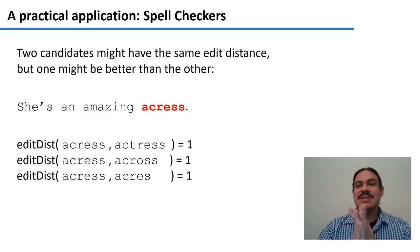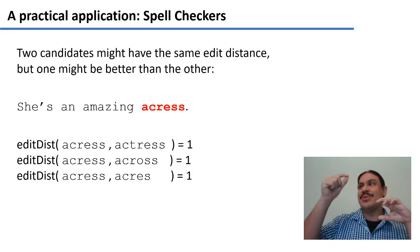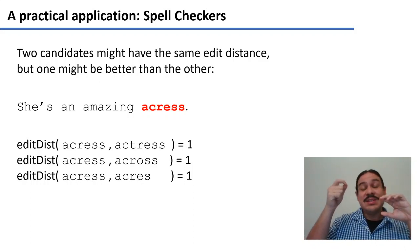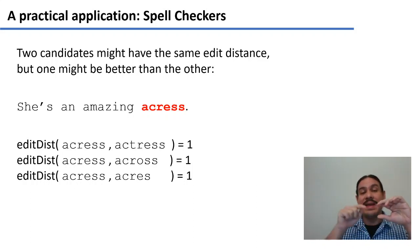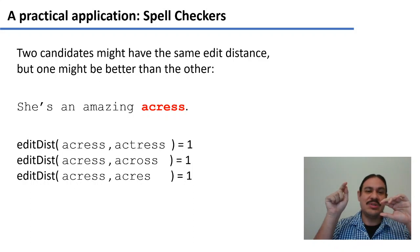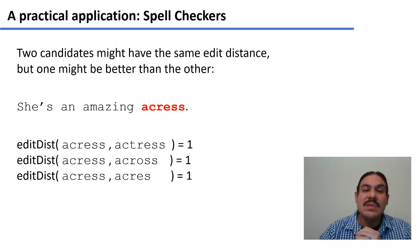Let's start with a very simple example of a non-word error: 'She's an amazing actres.' When you get 'actres', which is not an English word, you're going to look for it in your dictionary and not find it. But you are going to find many words that are at edit distance one — for example, 'actress' where you insert a 't', or 'across' where you change the 'e' for an 'o', or 'acres' where you delete one 's'. So there are several words that have the same edit distance.